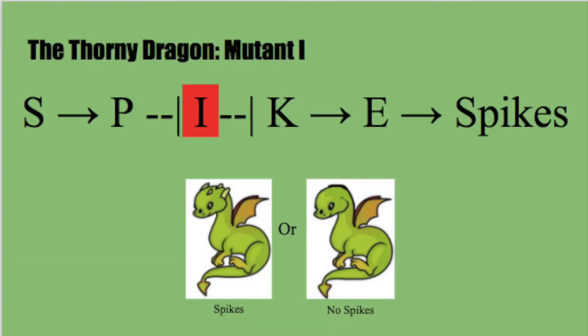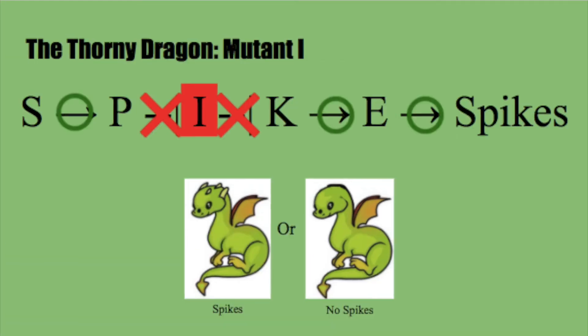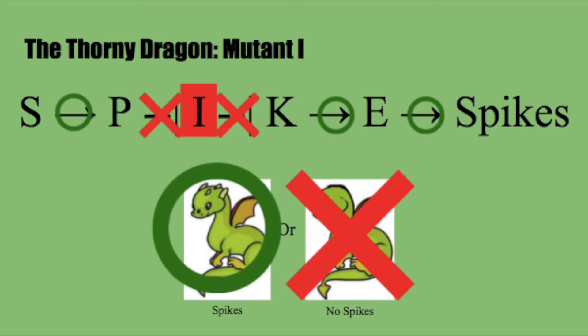Let's look at a mutation on the I gene. It starts at S and activates P, but without I, there is nothing to inhibit the K gene, which causes E to be activated and therefore causes a thorny dragon with spikes.